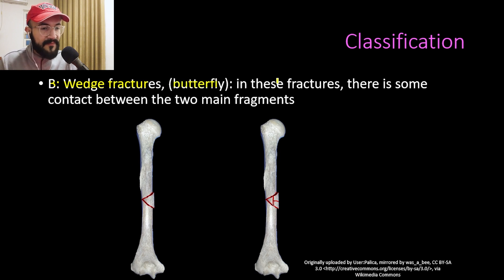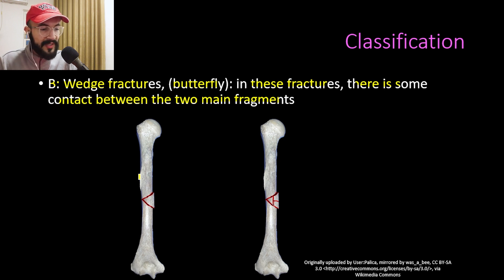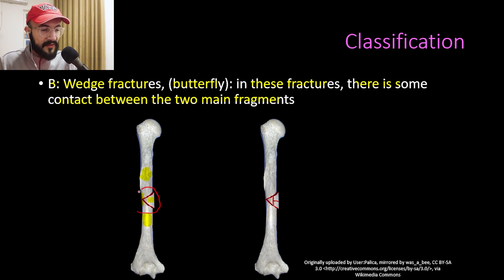Group B is for the wedge fractures, which are the butterfly fractures. In these fractures there is some contact between the two main fragments, and there are more than two fragments. The first example is the butterfly fracture and the second is the multi-fragment butterfly fracture.